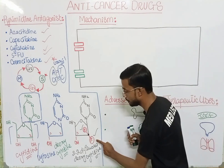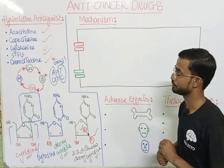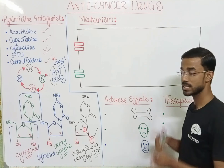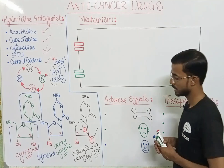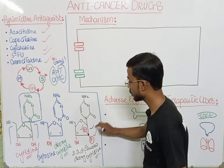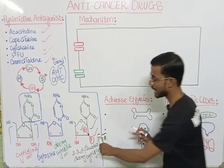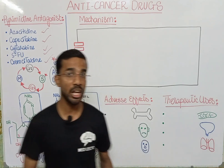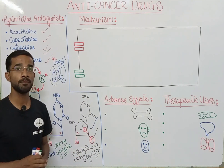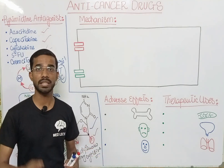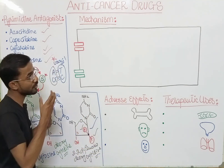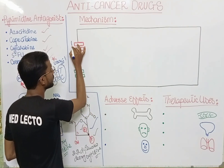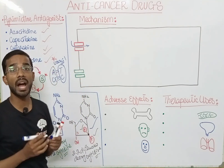This is the final structure. Gemcitabine is actually an analogue of deoxycytidine, and this is the structure of gemcitabine, which is analogous to deoxycytidine but with a little difference. Now if we move towards the mechanism — first of all, when a person takes gemcitabine, it enters from the blood into the cell through a transporter, specifically the nucleotide transporter.